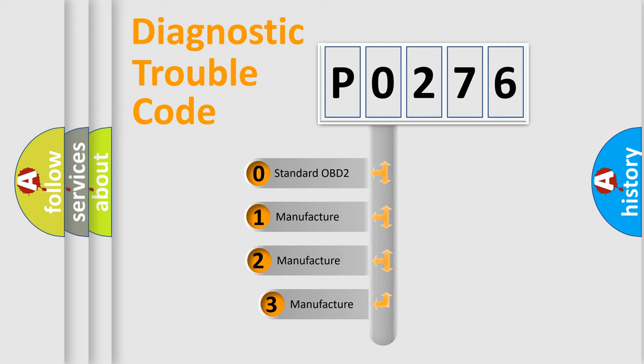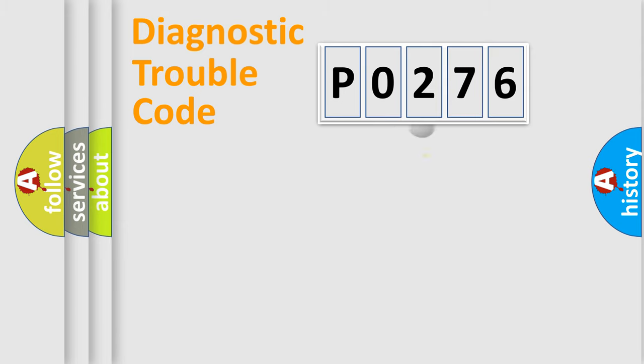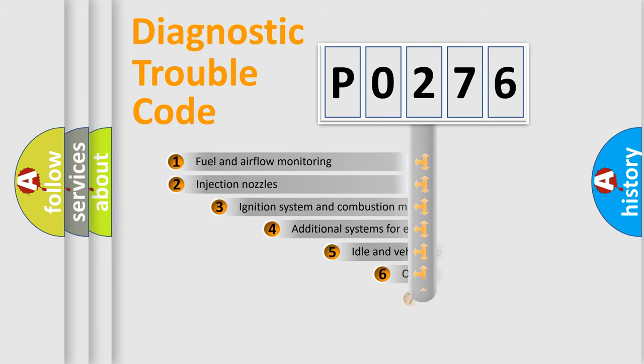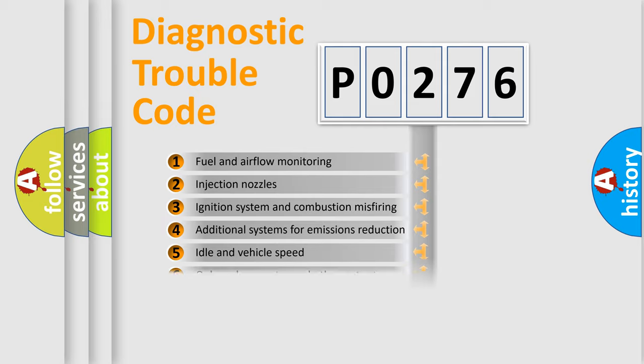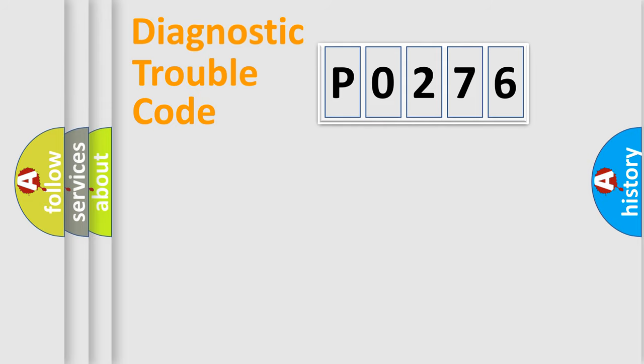If the second character is expressed as zero, it is a standardized error. In the case of numbers 1, 2, or 3, it is a manufacturer-specific expression of the car error. The third character specifies a subset of errors. The distribution shown is valid only for the standardized DTC code.